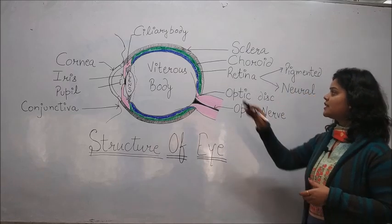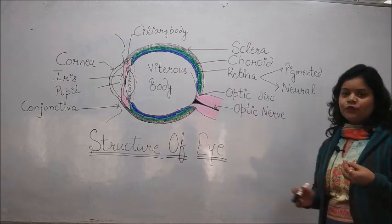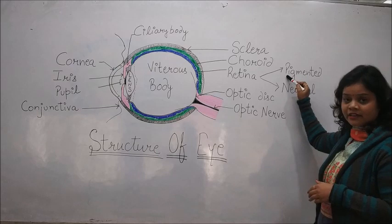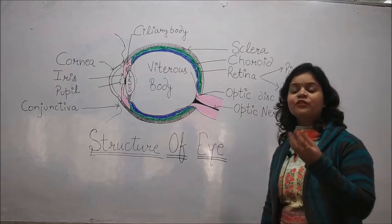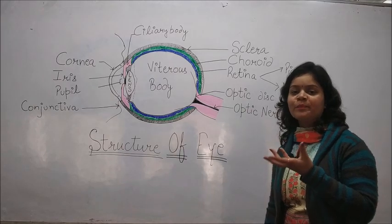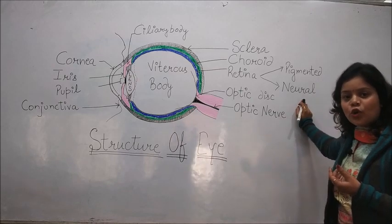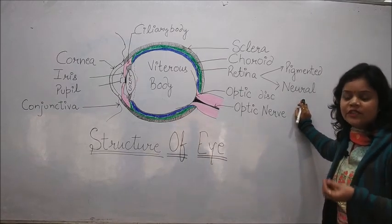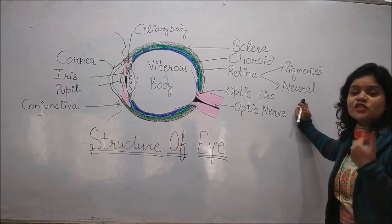Then innermost layer is the retina, the tunica nervosa. Retina is made up of two layers. One is the highly pigmented layer which is responsible for the absorption of the light which enters into the eyeball. And then there is the neural layer. The neural layer consists of the rods and the cone cells which are responsible for the sense of vision which passes the message to the brain where the image is formed.